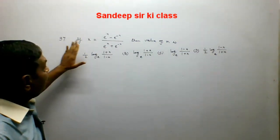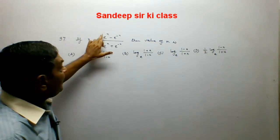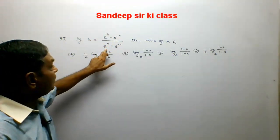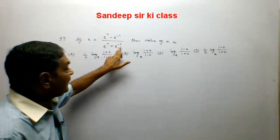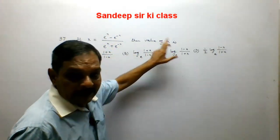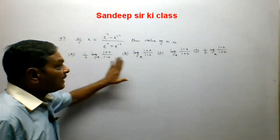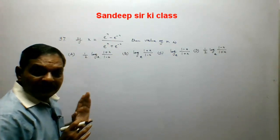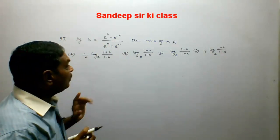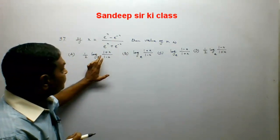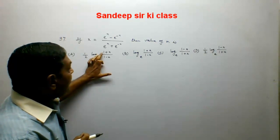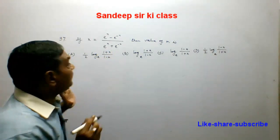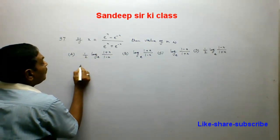Question 97: if x equals (e to the power n minus e to the power minus n) upon (e to the power n plus e to the power minus n), then find the value of n. Options are given. Since the options involve expressions like (1 plus x) and (1 minus x), we apply the componendo dividendo rule.